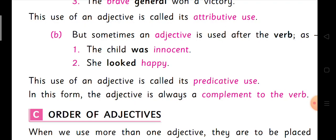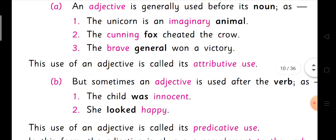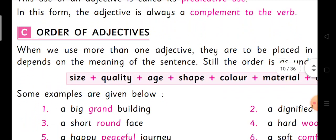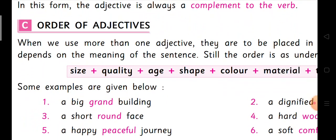I hope you understood about the adjective equivalent and the position of an adjective. Now we go to the third one: the order of adjectives. From the very beginning of grammar class, we were seeing about word order and how words should be arranged. In one sentence there can be many adjectives — two, three, or more — so there should be an order for them.